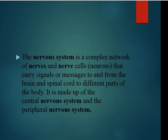Now let's start the lecture. First of all, we need to know that our nervous system is a complex network. It is made of nerves and neurons. These neurons carry signals or messages from the brain and spinal cord to the body, and from the body back to the brain and spinal cord. It is made up of the central nervous system and the peripheral nervous system.